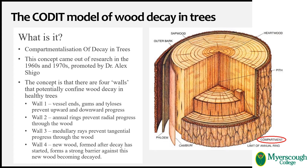I need to briefly introduce you to the CODIT model in case you're unfamiliar with it. The acronym CODIT stands for the compartmentalization of decay in trees. Some academics argue that the model actually identifies mechanisms that trees have to compartmentalize dysfunction, not decay — for example, by stopping embolisms occurring in the vascular tissues of the wood. This is perhaps an important distinction that was not made when the CODIT model was first proposed.